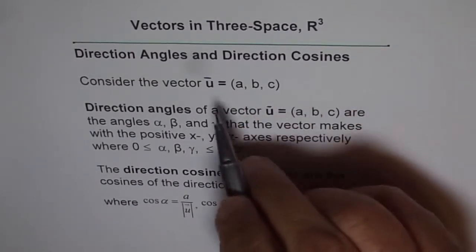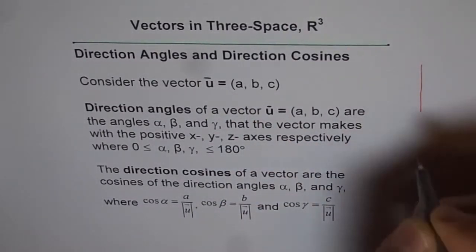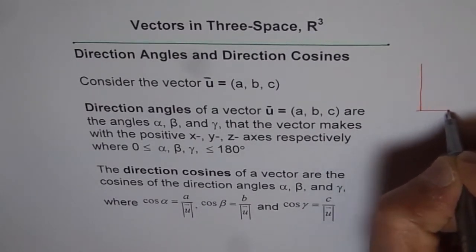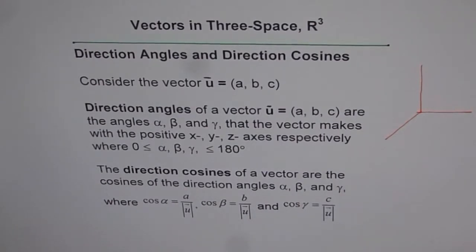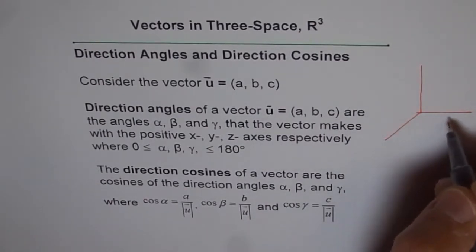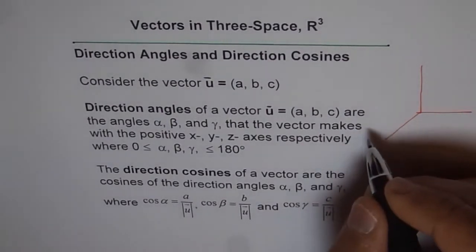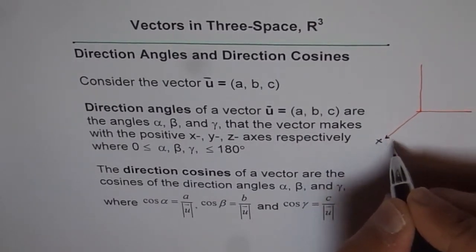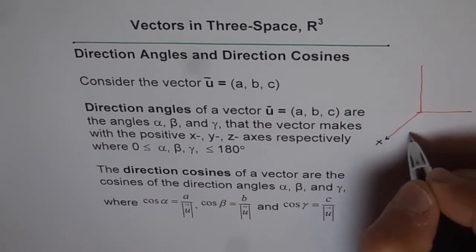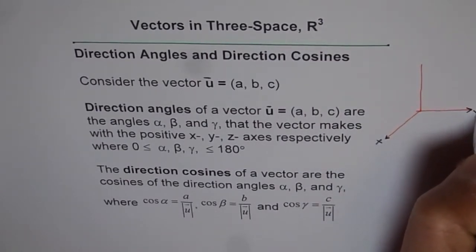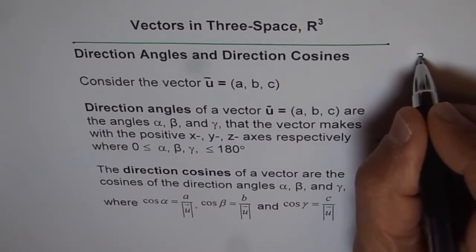Let us consider a vector U which is equal to (A, B, C). I will sketch this vector so you'll also understand how to sketch a vector in R3. That is my XYZ plane, the R3 plane. Using the right-hand rule, this is the X side. If you point your right-hand thumb towards Z, your fingers curl from X to Y — so that is Y, and the thumb points towards Z.